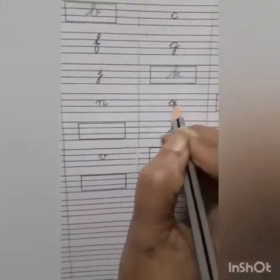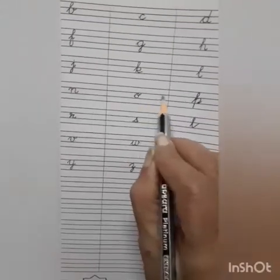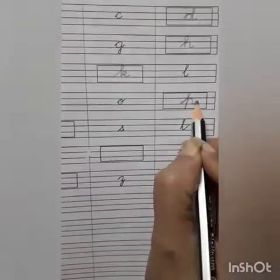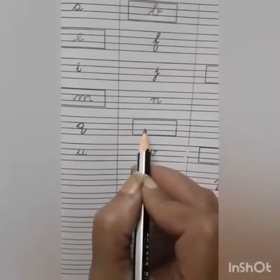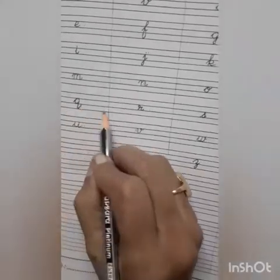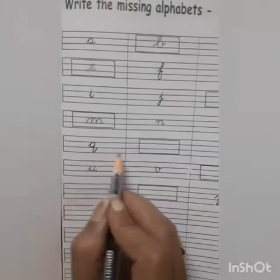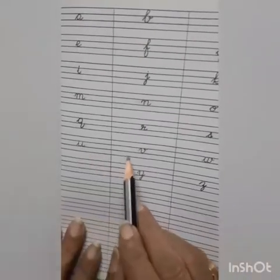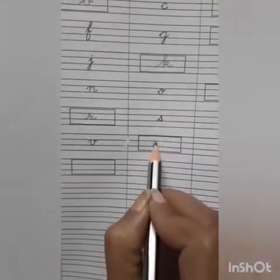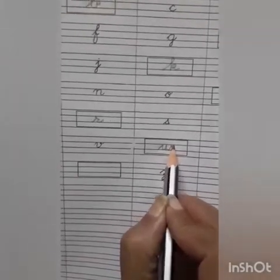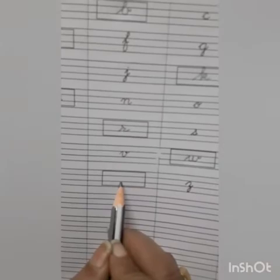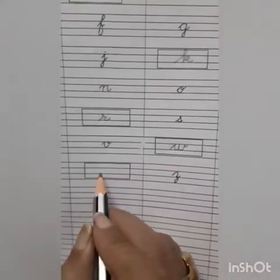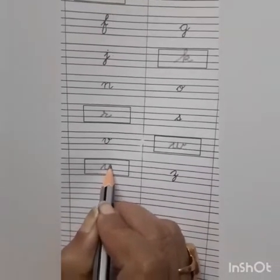And M, N, O — which alphabet is missing? O, P. So after O, P is missing. Write P. Then P, Q — which alphabet is missing? After Q, R is missing. Then U, V, W — so W is missing. Write W. Then W, X — which alphabet is missing? W, X, Y. So Y is missing. Write Y, Z.